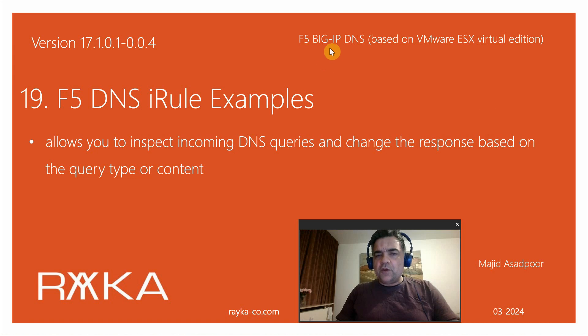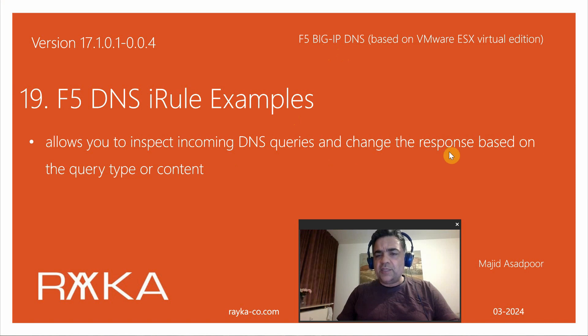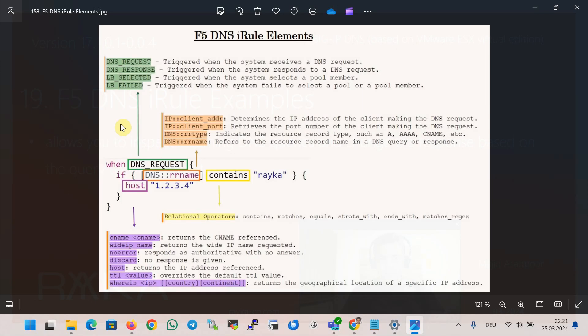Welcome to another video of the course F5 BIG-IP DNS. In this section, I'm going to give some F5 DNS iRule examples which allow you to inspect incoming DNS queries and change the response based on the query type or content. This figure tries to show the concept of F5 DNS iRules with a practical example. An F5 DNS iRule allows you to control and direct incoming DNS traffic based on specific conditions.